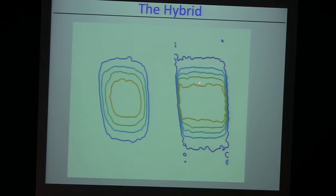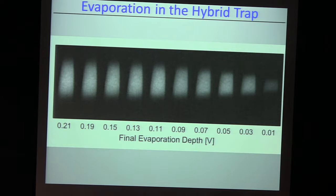Along Z, this is the Z direction — we are scanning through the phase diagram, changing the density — but along R there is no such change. It's rather beautiful. We can evaporate in this trap. You're cutting into the cloud, getting colder, losing atoms, but the shape changes completely, because radially the size doesn't change — axially, of course, you shrink because of the harmonic confinement along Z.